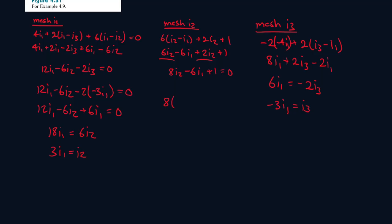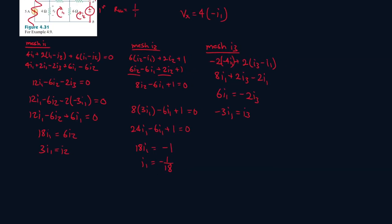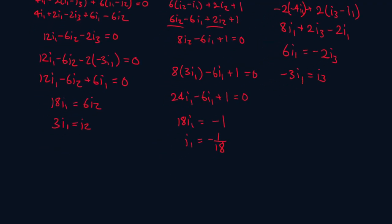Now plug that into here. So 8, 3I1 minus 6I1 plus 1 equals 0. So 8 times 3, that's 24I1 minus 6I1 plus 1 equals 0. 24 minus 6, that's 18I1. Let's bring the 1 to the other side, so it will be minus 1. So it will be minus 1 over 18. We need to find I2 though, because I2 moves in the opposite direction of I0. So here we'll replace it with this. And we get 1 over 6. Minus 1 over 6 is I2.